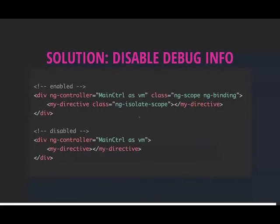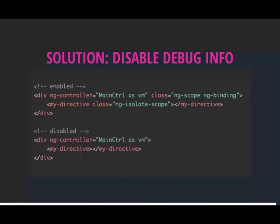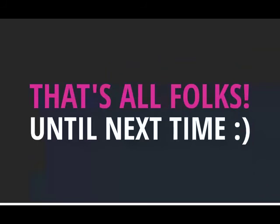With debug info disabled, instead of seeing class='ng-controller ng-scope ng-binding ng-isolate-scope' on your elements, you get clean DOM with no Angular-added classes. Note: form-related classes like ng-pristine are separate from debug info and are safe — they're used for styling (e.g., turning a field red on error).